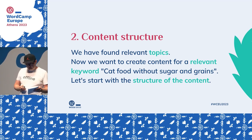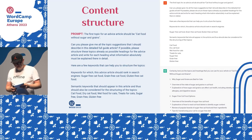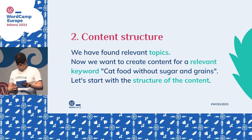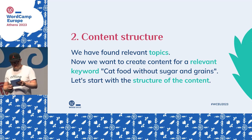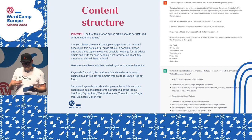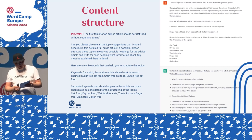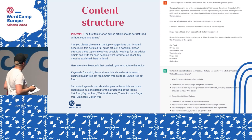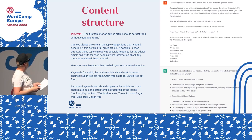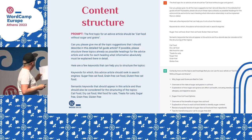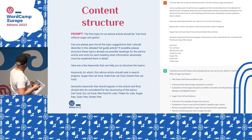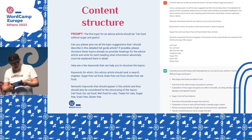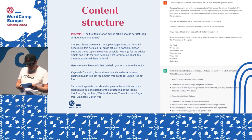Let's start with the content structure. The better you formulate what you want, the more likely you will get what you want. I write to ChatGPT: 'Can you please give me all topic suggestions that I should describe in this detailed full guide article?' Please structure the topics already as possible headlines for an advanced article and write what each heading should explain in detail. And ChatGPT responds.